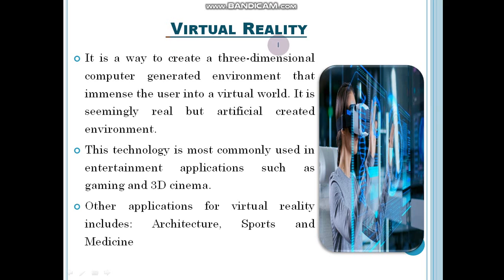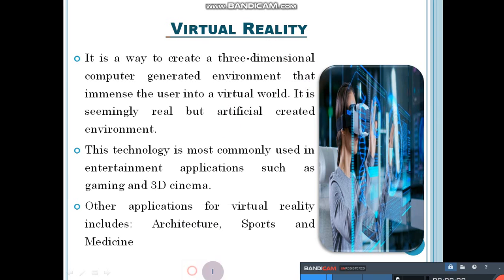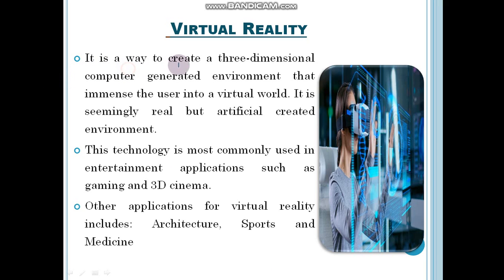The next topic is virtual reality. Virtual reality is a way to create a three-dimensional, computer-generated virtual world that immerses the user into a virtual world. It seems real but is an artificially created environment. Virtual reality is a computer-generated virtual environment. For example, 7D cinema is an example of virtual reality — it is not real but it seems real. When you watch movies you think you are really in that world, but you are not. It creates a virtual world for you.